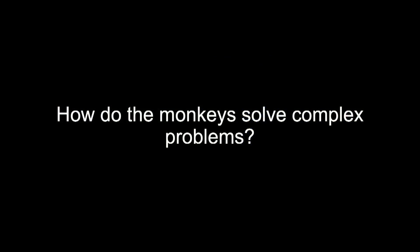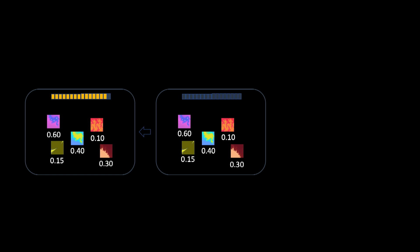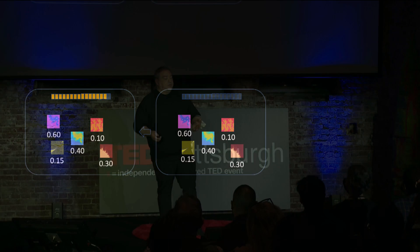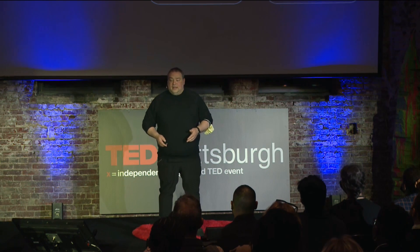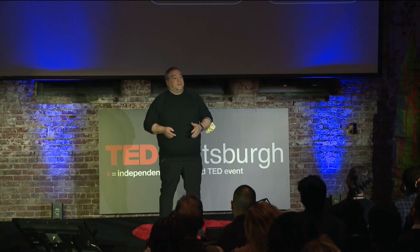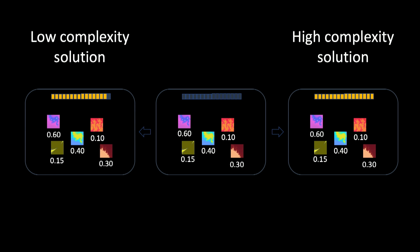That begs the question: how do monkeys solve these problems? Looking at one particular problem, consider a simple solution — take the largest item available at 0.6, then the next largest at 0.15, stop, and get 0.75ml of juice, never thinking about combinations. We call this the low complexity solution. But there's a different solution: ignore the biggest item, search for combinations, and find an even better outcome — 0.8ml, the optimal. We call this the high complexity solution. There are multiple ways to solve the problem.